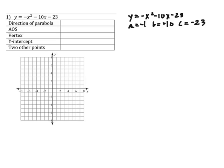So the direction of the parabola is identified by a. A is less than 0, so that means it opens down.